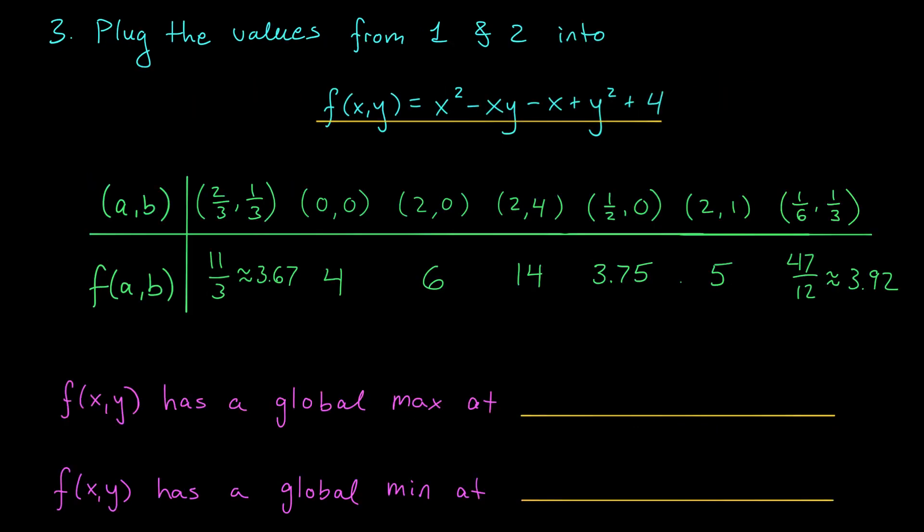Okay, folks. With the help of a calculator, I found the value of our function at the 7 points that we found in steps 1 and 2. You can see that the largest value is going to occur here at the point (2,4). Our function has a global max at (2,4), with value 14.